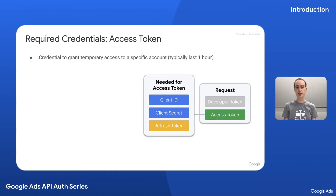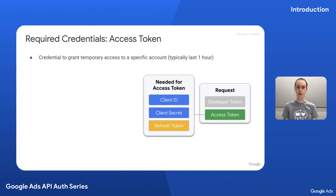If a developer token is like a driver's license, an access token is like a car key — it allows you to access a specific account. However, access tokens are short-lived and typically last one hour. So in our metaphor, this would be a car key that only works for about an hour. Not a great car key.